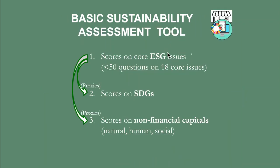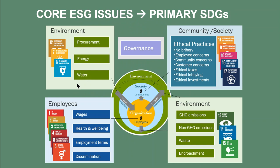The tool takes those scores on the ESG issues and uses them as proxies to generate scores on Sustainable Development Goals and the non-financial capitals. You'll notice that the design point is less than 50 questions on the 18 core issues — the good news is that we're down to only 20 questions, and still very comprehensive. Looking at this ESG issues mapping to the SDGs, we can show that the ESG issues are related to primary aligned SDGs — such as water to water, energy to energy, greenhouse gases to climate action, wages to no poverty and zero hunger. So we can show how the scores on all of these ESG issues generate scores, or can be used as proxies, for their associated aligned primary SDGs.